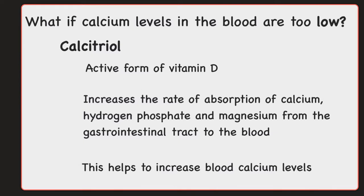The blood calcium levels are actually going to directly control the secretion of both parathyroid hormone and calcitonin through negative feedback. When calcium levels are low, this is going to cause parathyroid hormone to be released to help increase calcium levels, along with calcitriol. Once calcium levels are back to normal, negative feedback is going to occur and parathyroid hormone and calcitriol will no longer be released. This also works similarly with calcium levels in the blood being too high and triggering the release of calcitonin. When calcitonin is released, it is going to work to lower blood calcium levels. Once blood calcium levels have returned to normal, negative feedback will kick in and calcitonin will stop being released, and therefore blood calcium levels will remain stable.